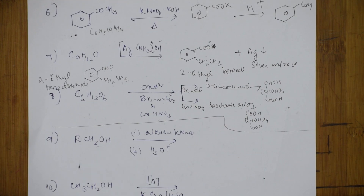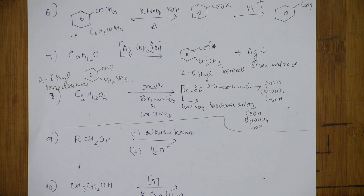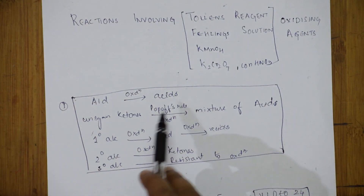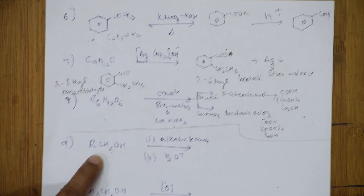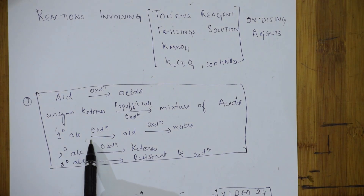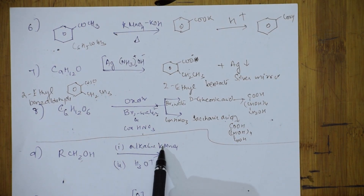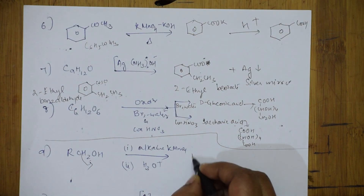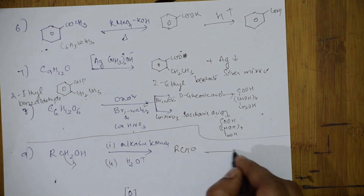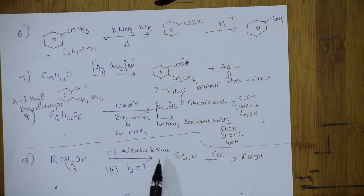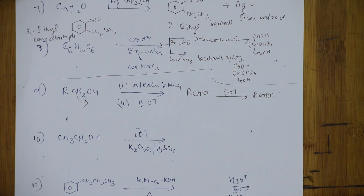Next reaction: alcohols with KMnO4 in acidic medium. Remember: primary alcohols on oxidation give aldehydes; aldehydes on further oxidation give acids. Remove the hydrogen to get RCHO, and further oxidation gives the acid. Ketones will not oxidize further. This demonstrates the power of KMnO4 as an oxidizing agent.